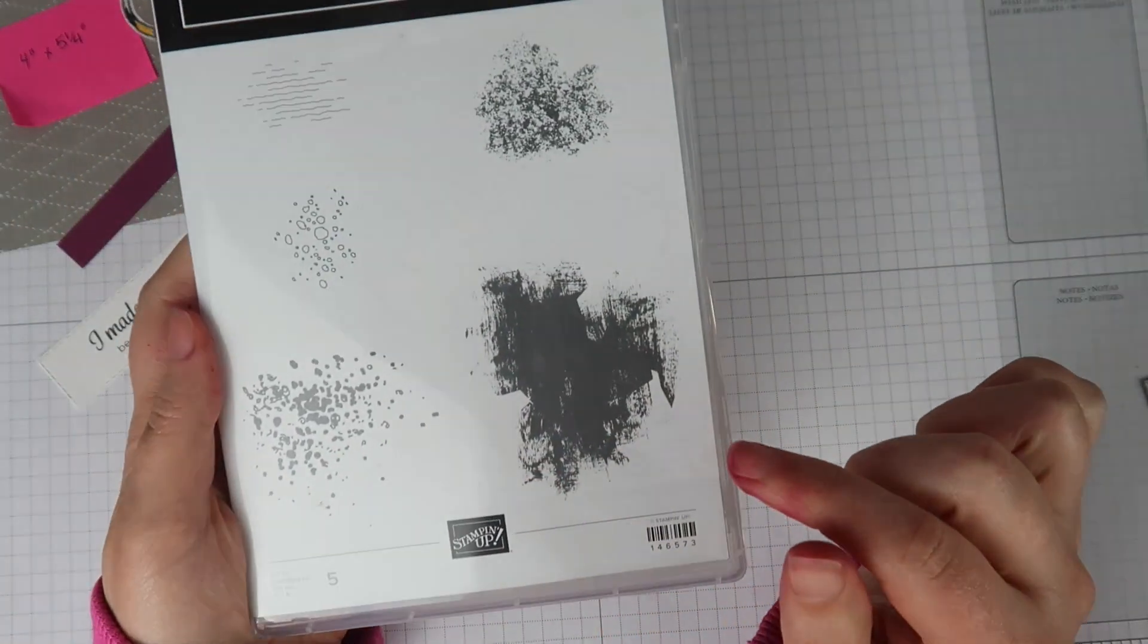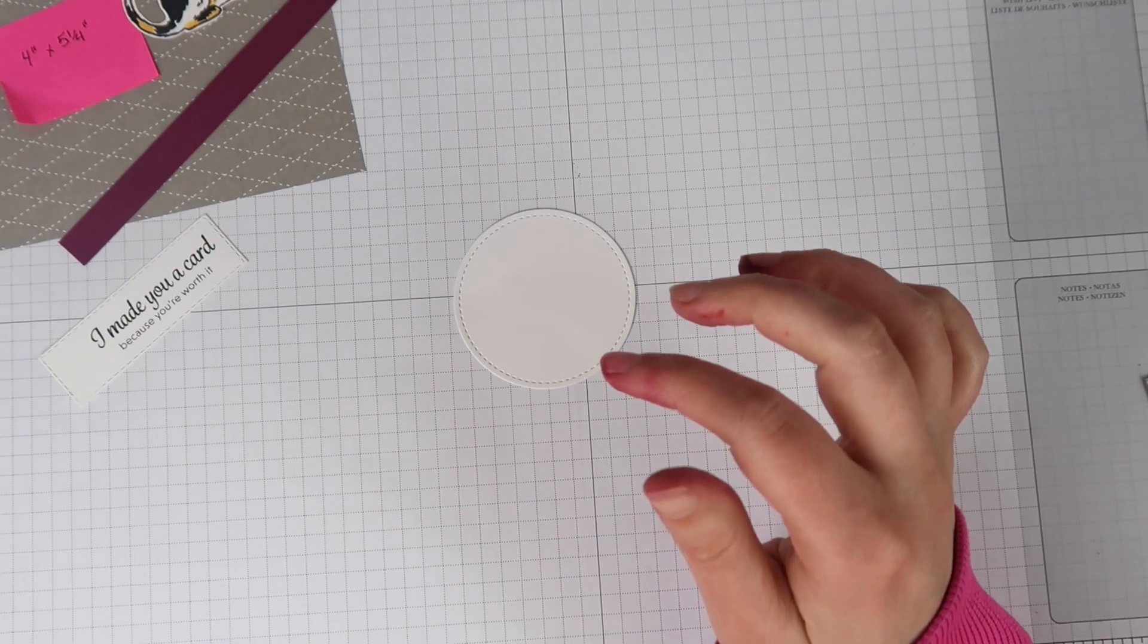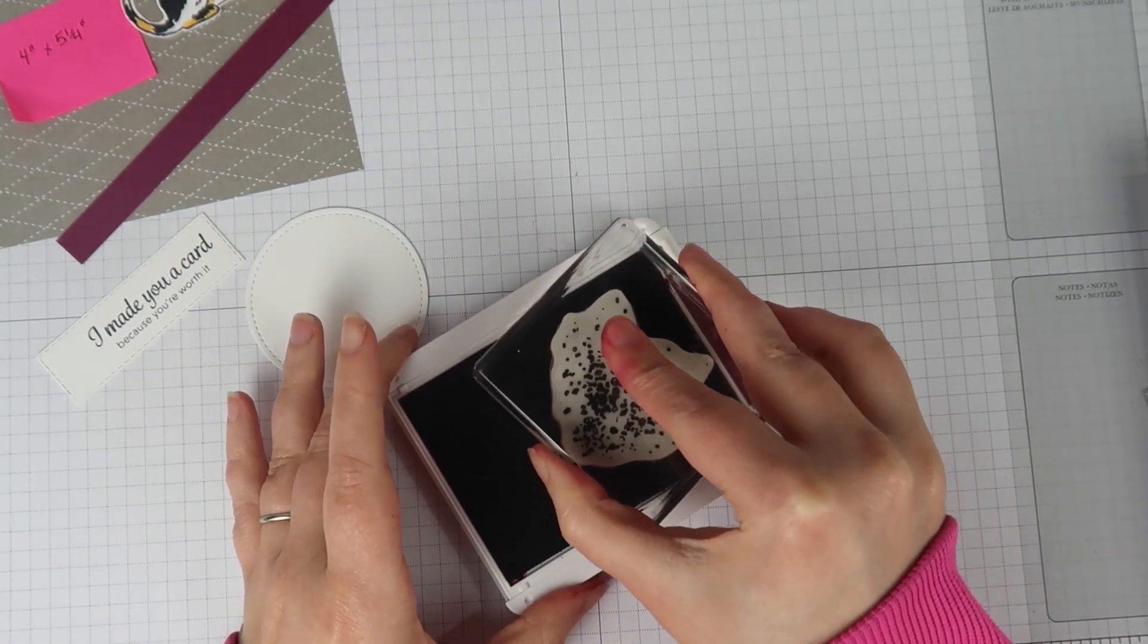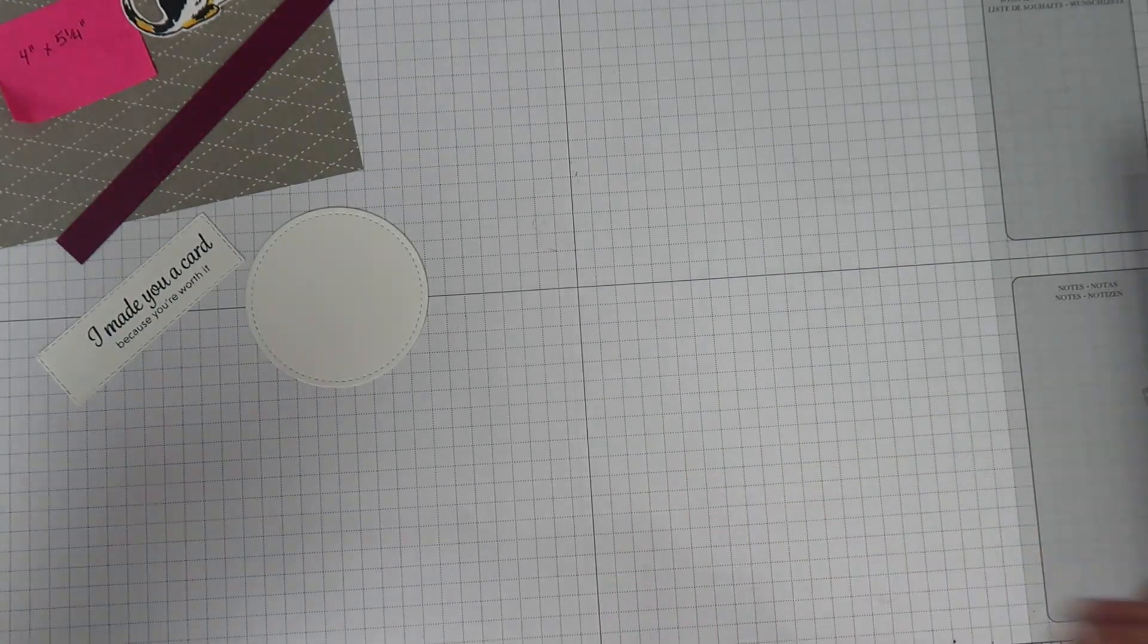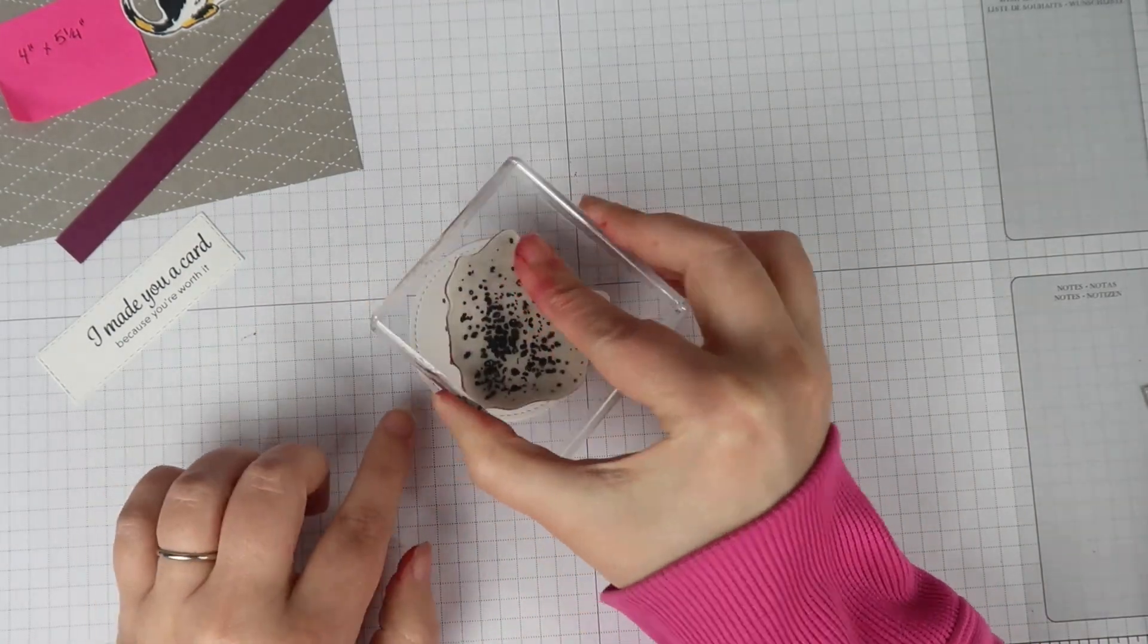I have this Artisan Textures background stamp. You can use any kind of texture. You can make your own texture. And I am stamping this with rich razzleberry ink. But before I stamp it, I'm going to stamp off onto a scrap piece of paper so that it's not quite so dark. But I just want this to frame my image once I have it all on.